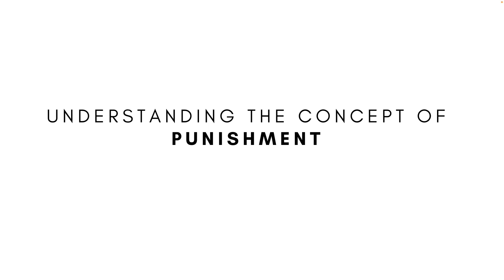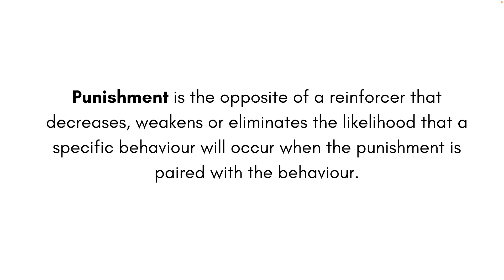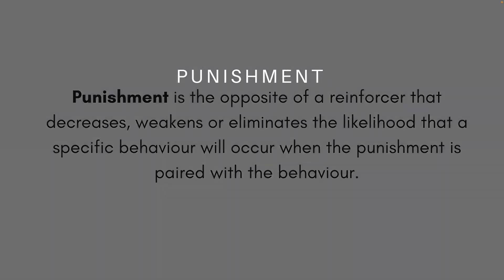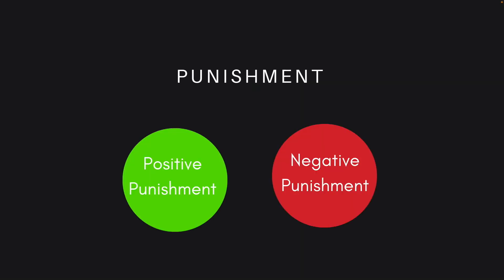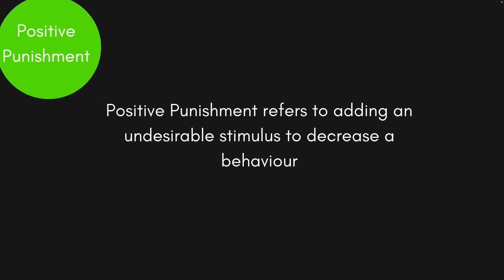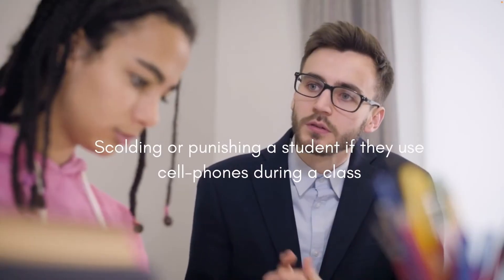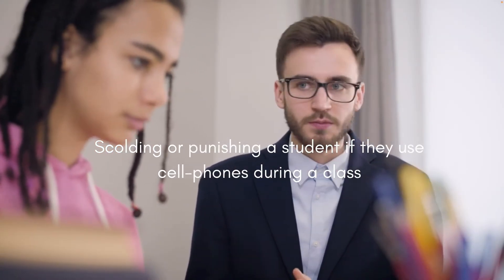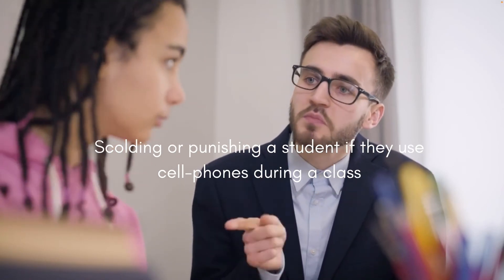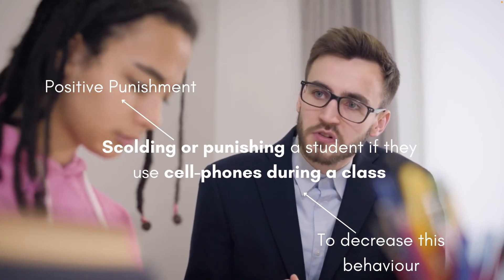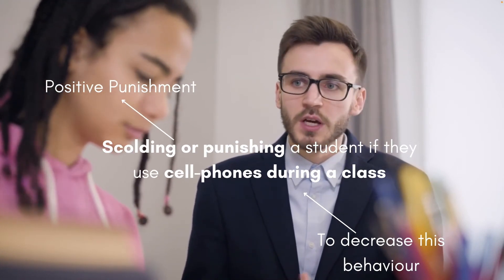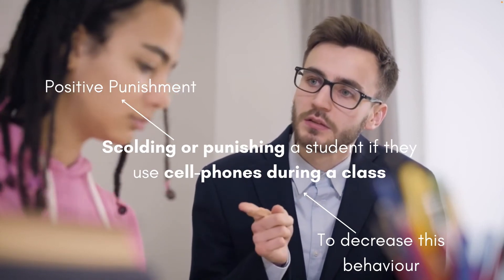Punishment is the opposite of a reinforcer — it decreases, weakens, or eliminates the likelihood that a specific behavior will occur when paired with that behavior. Punishments can be positive or negative in nature. Positive punishment refers to adding an undesirable stimulus to decrease a behavior. For example, if a student is found texting during class, the teacher scolds the student. The scolding is the positive punishment aimed at decreasing the texting behavior.